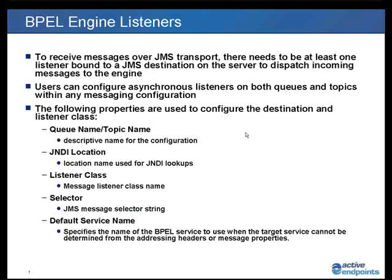To receive messages over JMS transport, at a minimum there needs to be at least one listener bound to a JMS destination that will be able to dispatch messages into the process engine. You can configure the listeners on either a queue or a topic, and you can create listener configurations by setting the properties for the destination name you are going to be listening on, the JNDI location, and the name of the listener class — which will default to the base listener class that ships with the enterprise product.